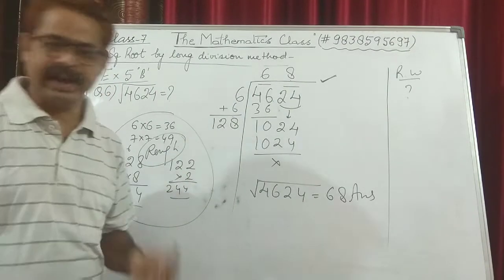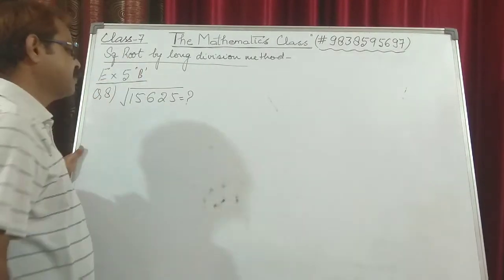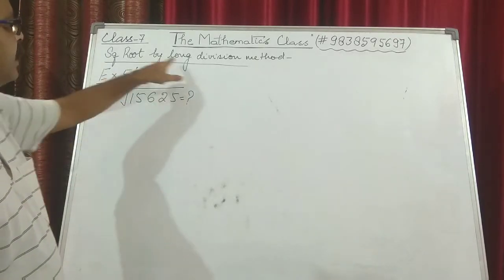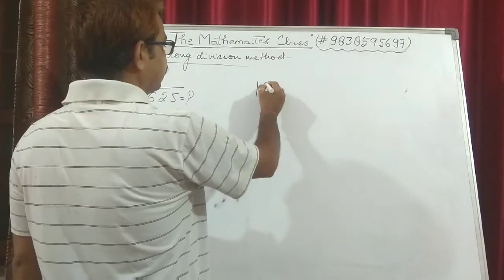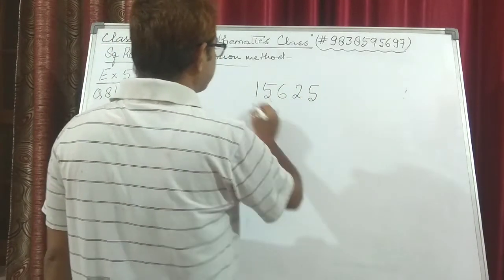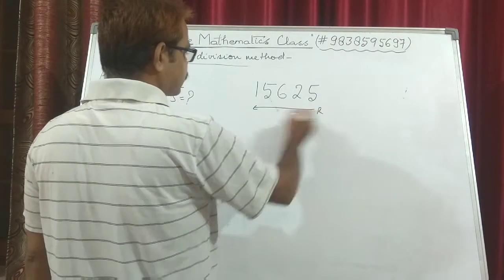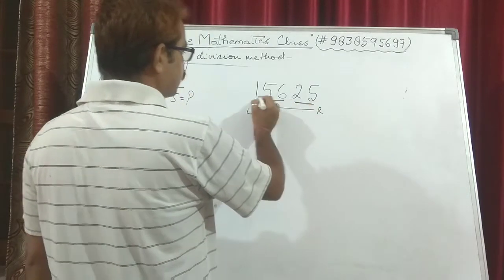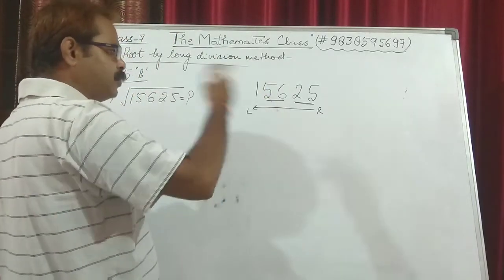Now we move on to question number 8 of exercise 5b: find the square root of 15625 by long division method, or simply by division method. We have 1, 5, 6, 2, 5. Moving from right to left making pairs: first pair is 25, second pair is 56. Only 1 is left. So first we will deal with 1 and then continue.